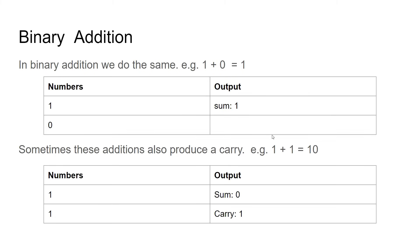In binary we pretty much do the same thing. But in binary the maximum digit we can have is 1. We don't go all the way up to 9, we just go to 1. And if it gets higher than 1 then we have to start carrying it over to the next column.